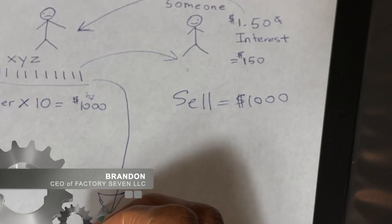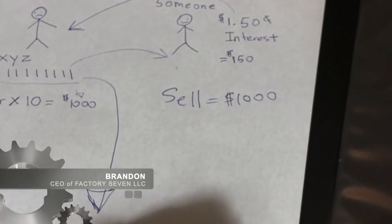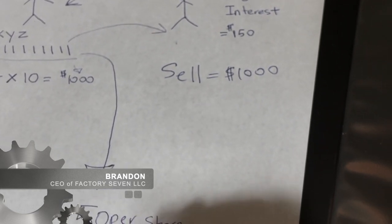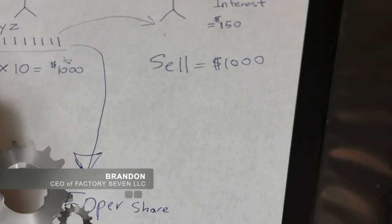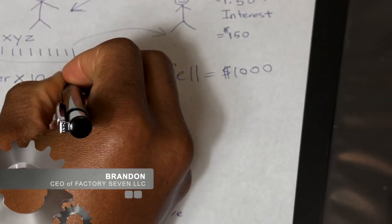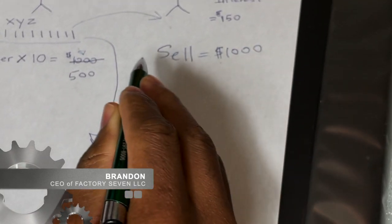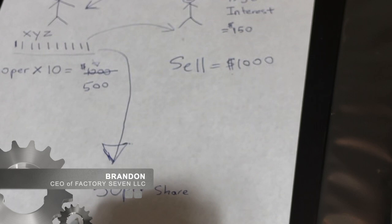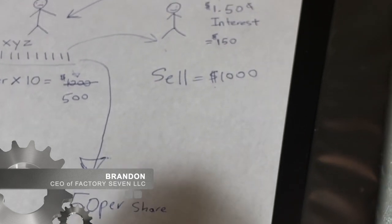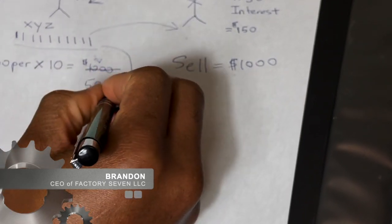Now this person is waiting until the value of the shares decline. Now say the shares now dropped to $50 per share. That means the portfolio is now worth $500. So this is now worth $500. So this person now, they now buy back the shares on the market at $50 per share.